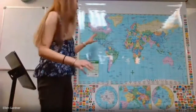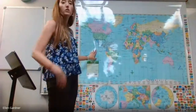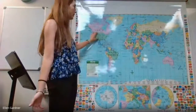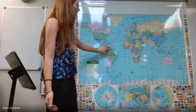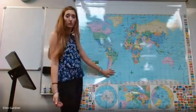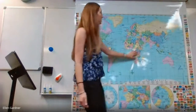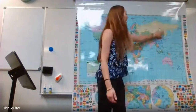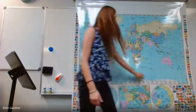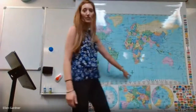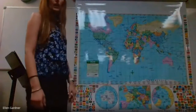We've got North America here — just the continent that the United States is on. So we've got North America, South America, Europe, Africa, Asia, Australia, and Antarctica. Those are the seven continents.